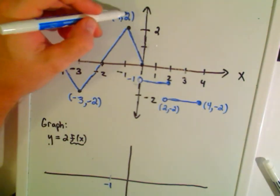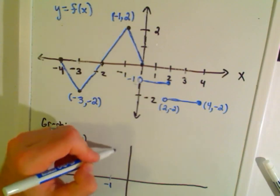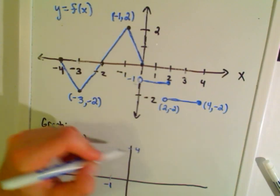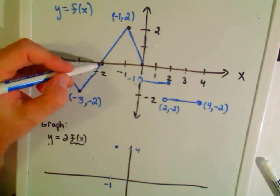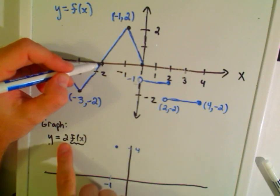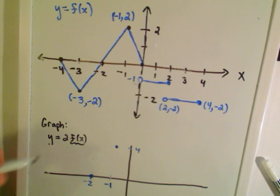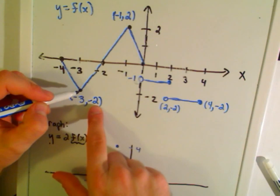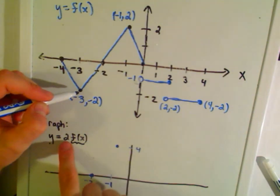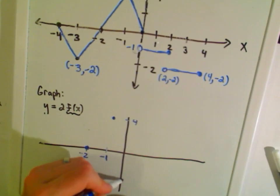At x = -1, instead of being at y = 2, you're now multiplying by two, so you'll be at a height of four. At x = -2, the original y-coordinate is zero — multiply by two and you're still at zero. At x = -3, the original y-coordinate was -2, so multiplying by two puts you down at y = -4.